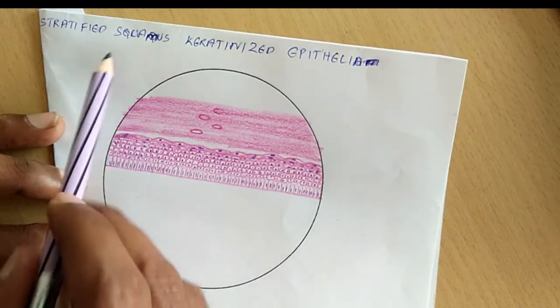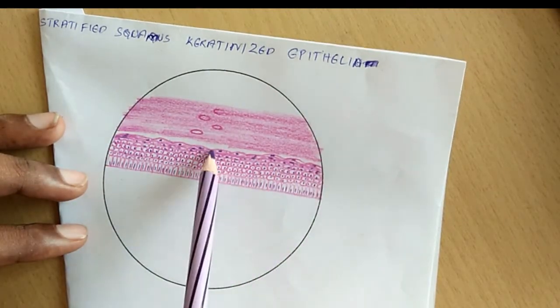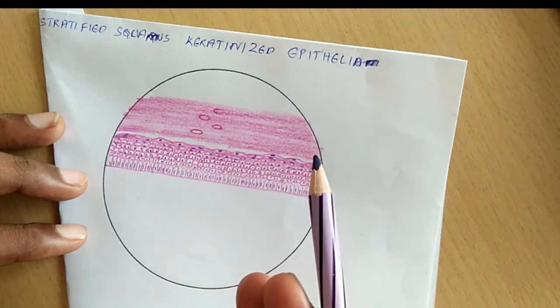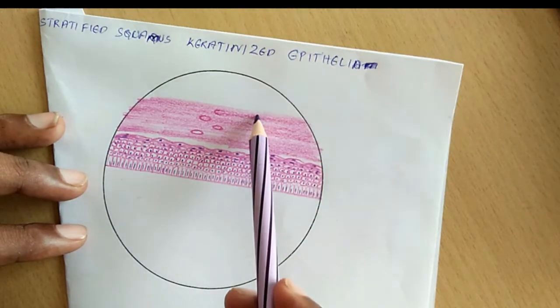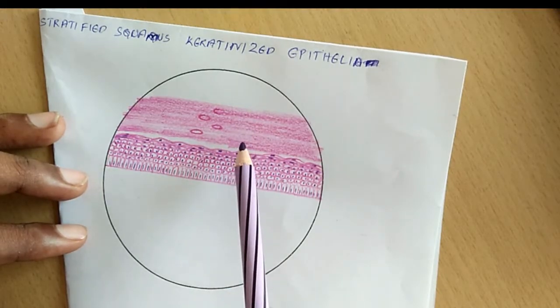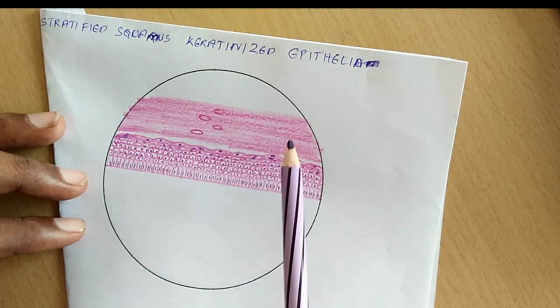So we have drawn a diagram of stratified squamous keratinized epithelium. Here I have drawn the picture of skin, that is thick skin. You can see the keratinization at this level, which is nothing but the stratum corneum.